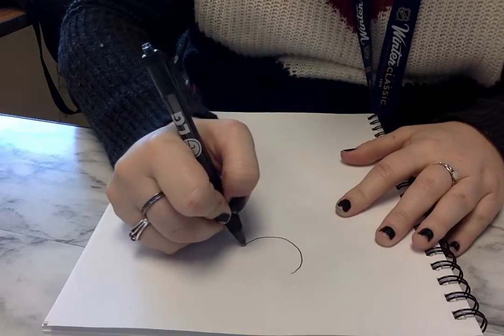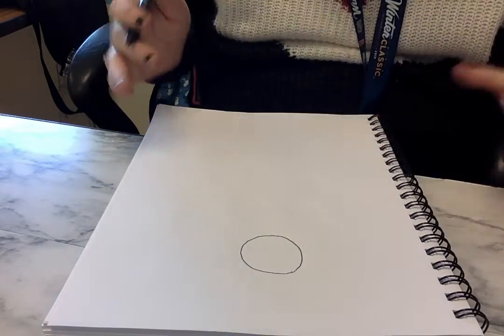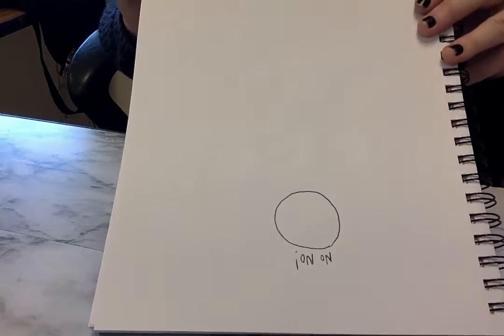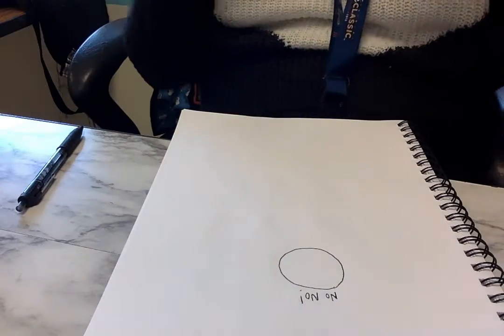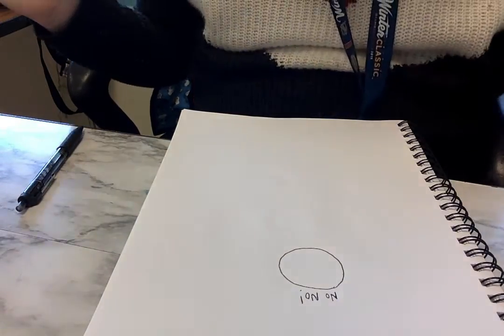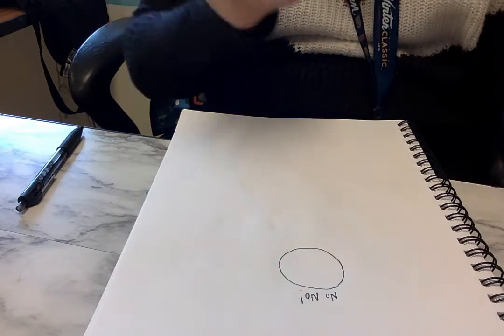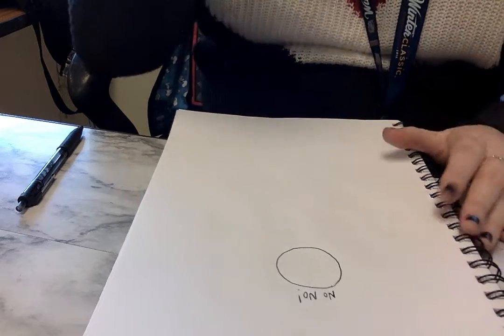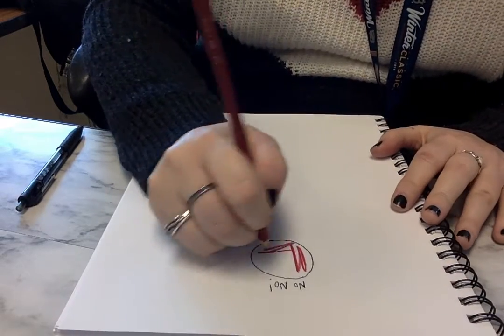I'm going to draw circles for each technique. The first one is the no-no. I wrote it upside down, but this is how you don't want to color. This is what we see on some projects I don't want you to do.